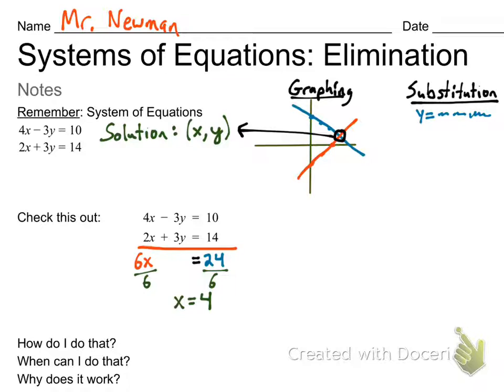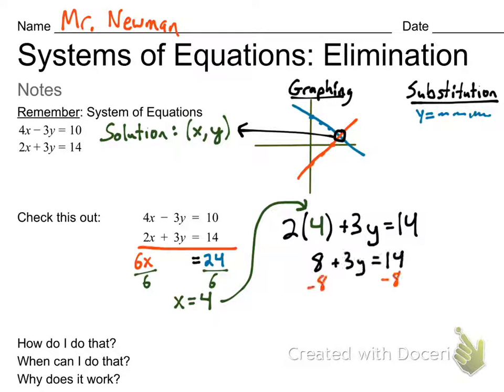That was way faster than graphing or substitution. Either would have taken a lot more time to do. Then of course we still need x comma y, so we can plug the 4 into one of those equations. I'm going through this quickly because you guys know all these steps. But I want to answer three questions today. First of all, the solution is 4 comma 2. How do we do this? Then when can we do this? And lastly, I'm going to answer why does it work?